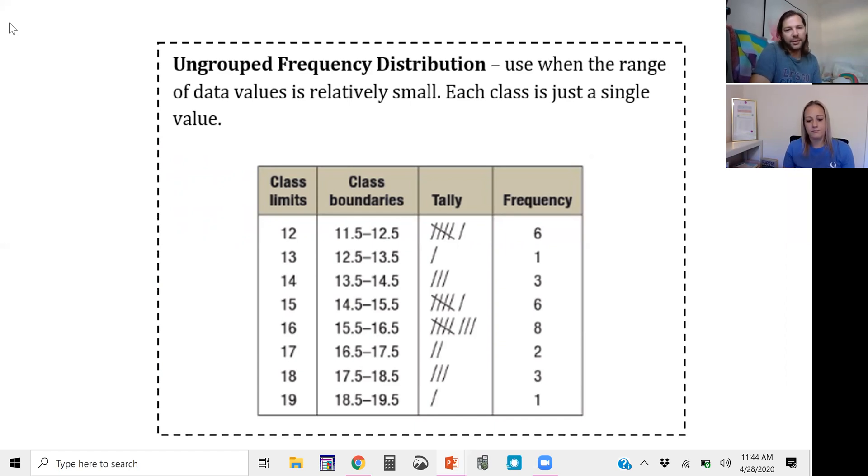So this might be like scores on a quiz or something, right? So you might have six people got a 12, one person got a 13, one person got a 19. It looks like most people, eight people got a 16, which is like an 80 out of 20. Couldn't be bad. I'm just making this up.